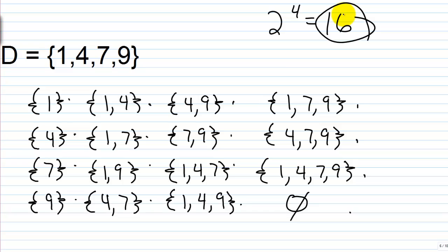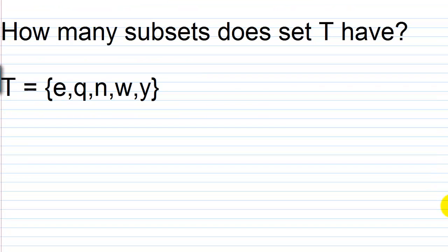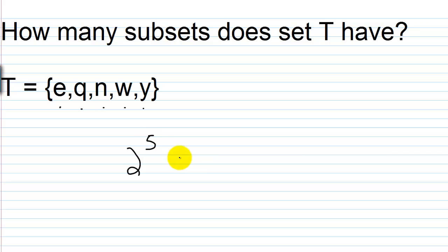You don't need to go through and list this each time — just follow the formula. How many subsets does set T have? Set T contains the elements E, Q, N, W, and Y — five elements exactly. So we would have two to the fifth power, because it's two raised to the number of elements you have. Two to the fifth power is 32, so T has exactly 32 subsets.